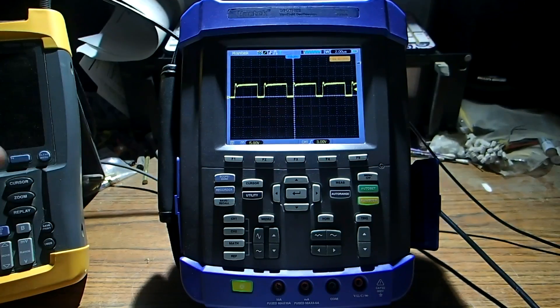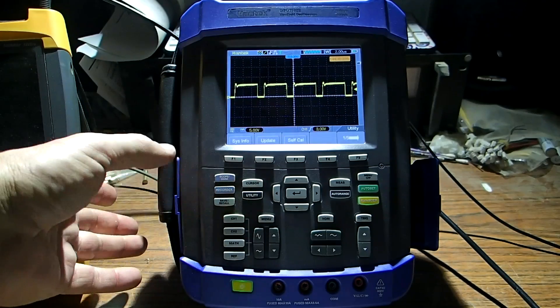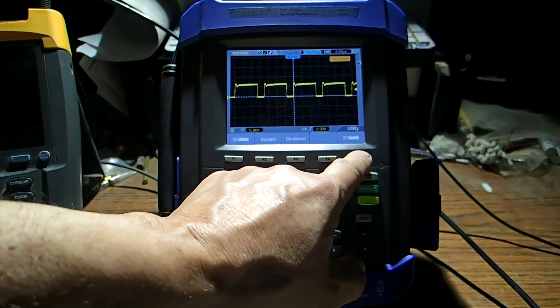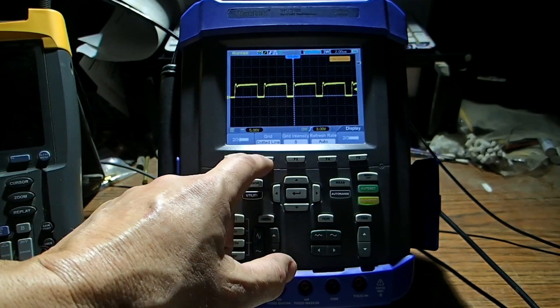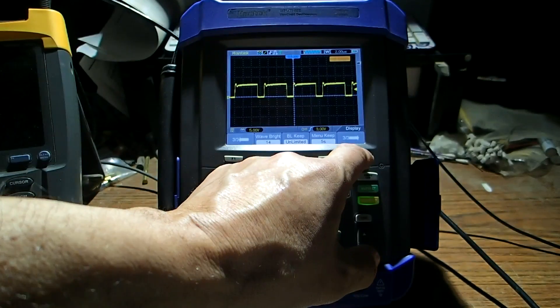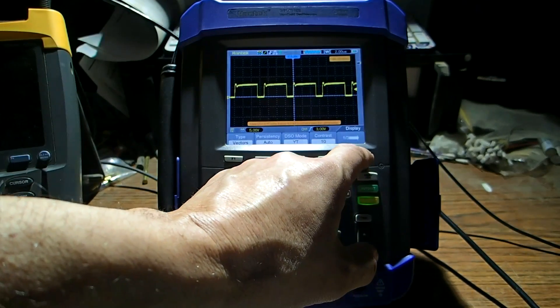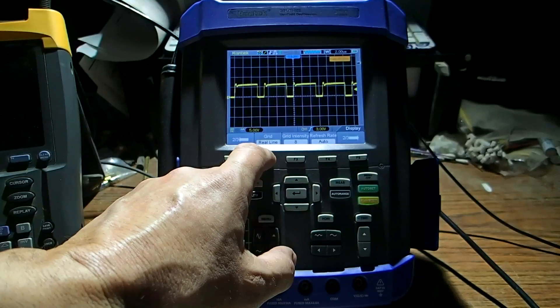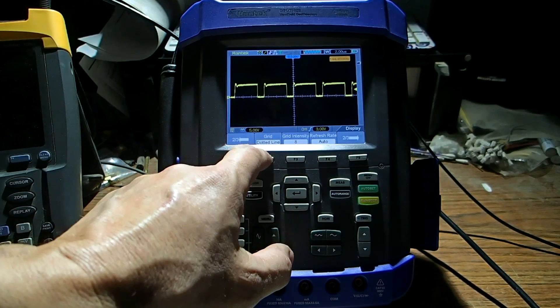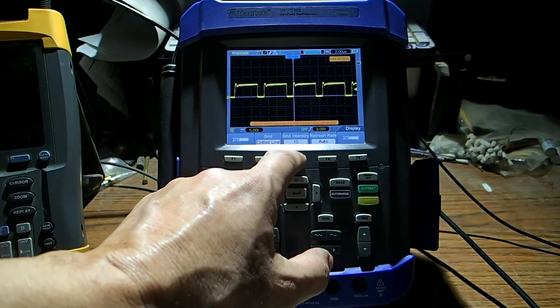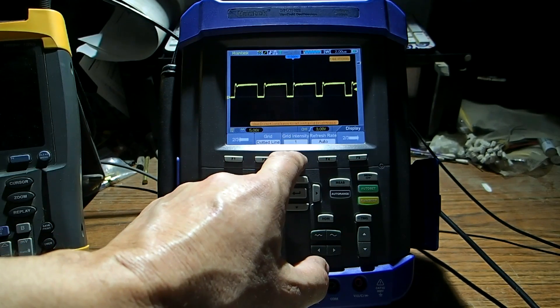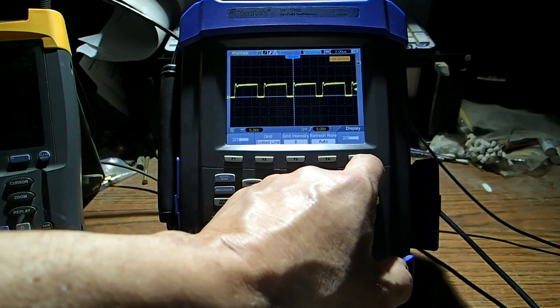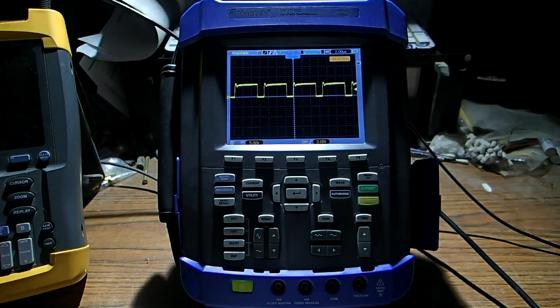One nice feature is you can change the intensity of the grid background. Under utility and go into I believe it's display. And there's a grid dotted line. It's on the second part of the menu. So there's three little menus to display. There's dotted line. We can have all straight lines. We can turn it off. So there's dotted line and also intensity. You can control how bright that dotted line is. It's very fancy. Nice feature.